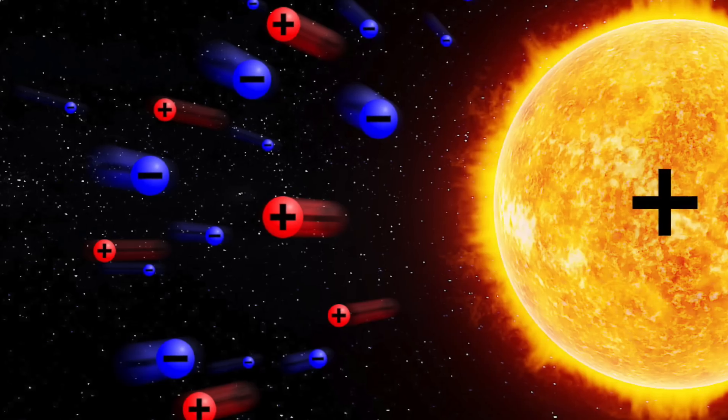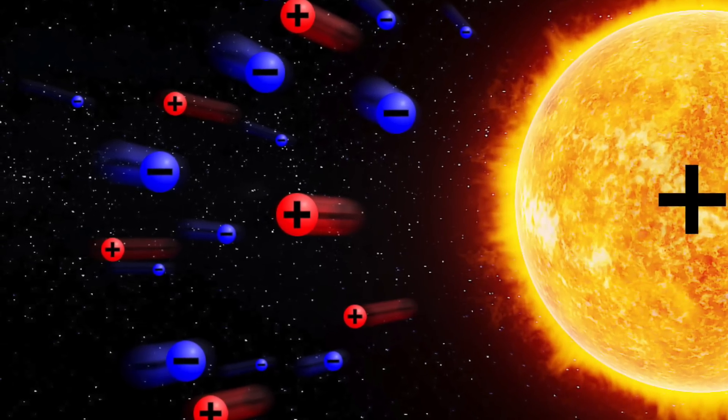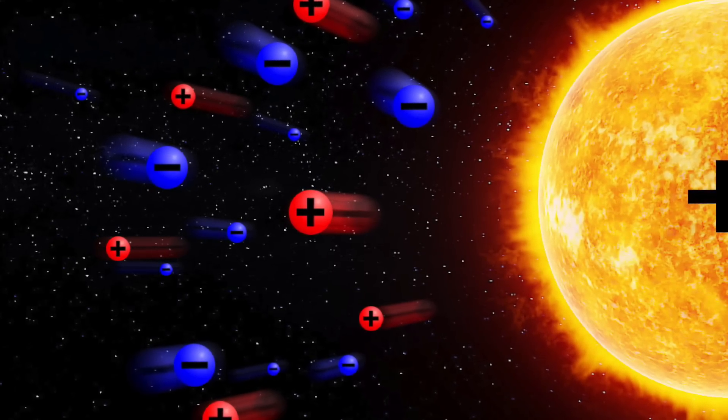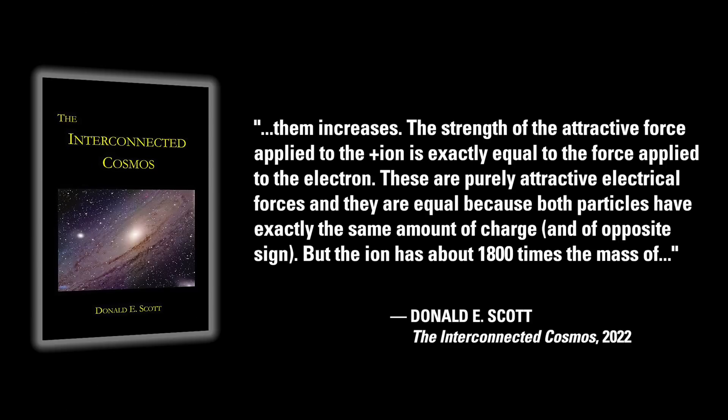But consider what occurs when an electron moving toward the sun approaches an ion that is moving outward away from the sun. As the ion and electron get closer to each other, the attractive force between them increases. The strength of the attractive force applied to the positive ion is exactly equal to the force applied to the electron. These are purely attractive electrical forces. But the ion has about 1,800 times the mass of the electron.